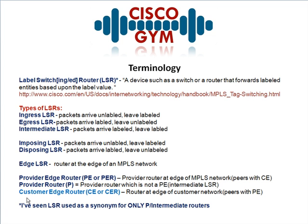There's also a C router — that's a trivial definition. It would be a customer router that's not peering with the PE and is generally not running MPLS, though it could be if your customer edge router is running MPLS. It's something that might pop up but it's fairly trivial.